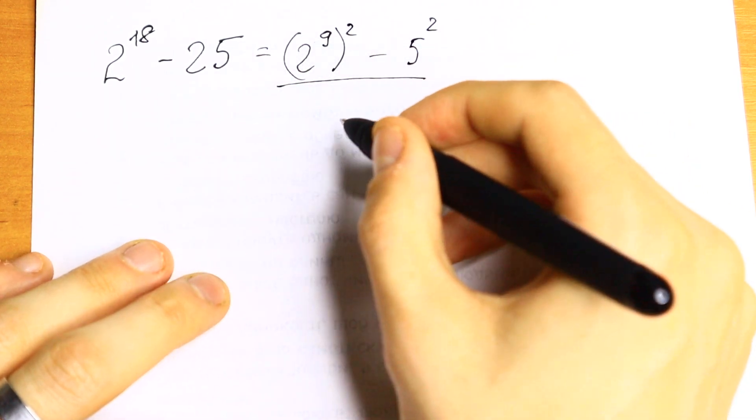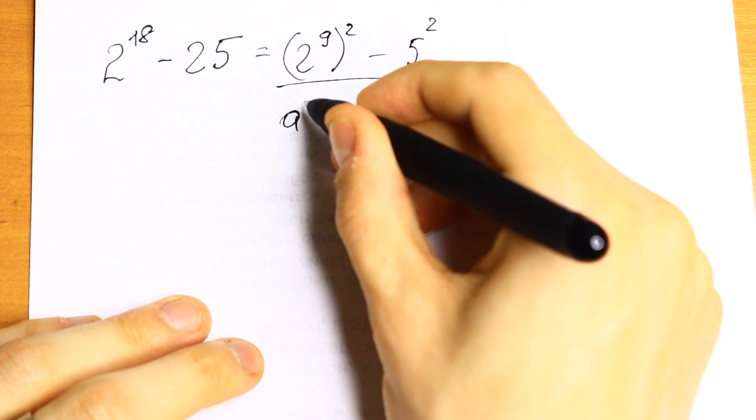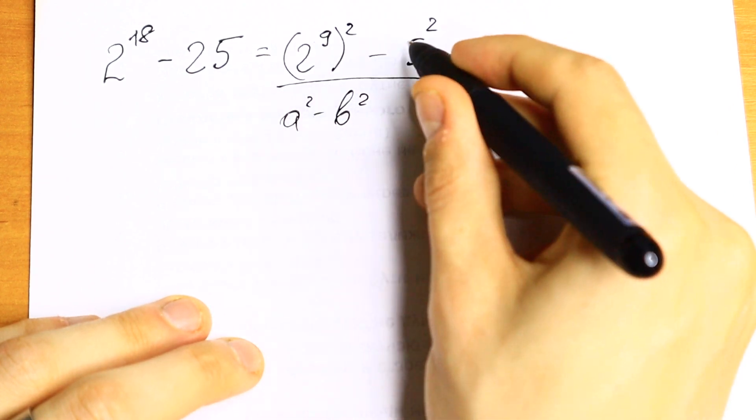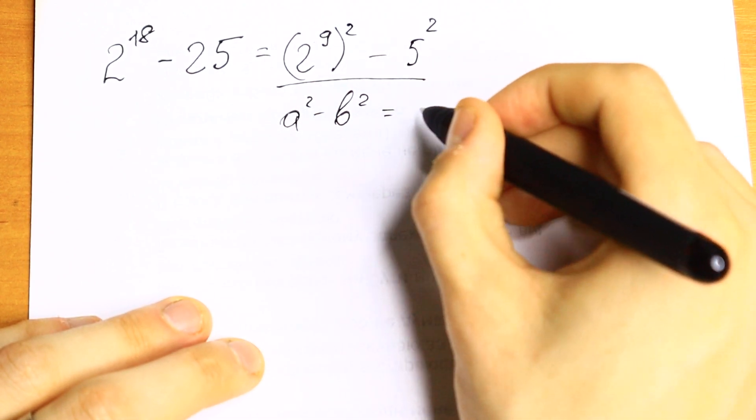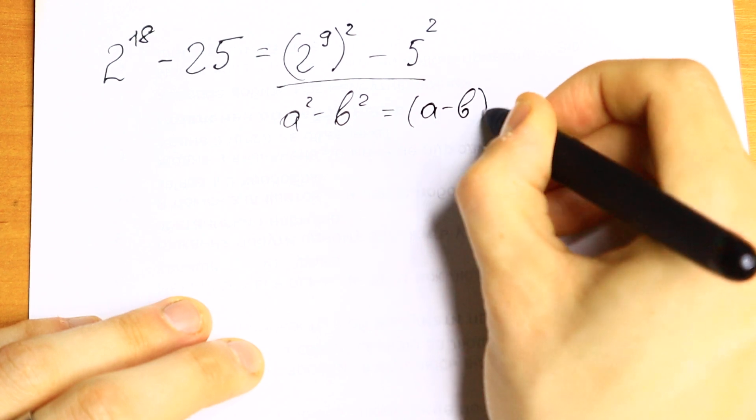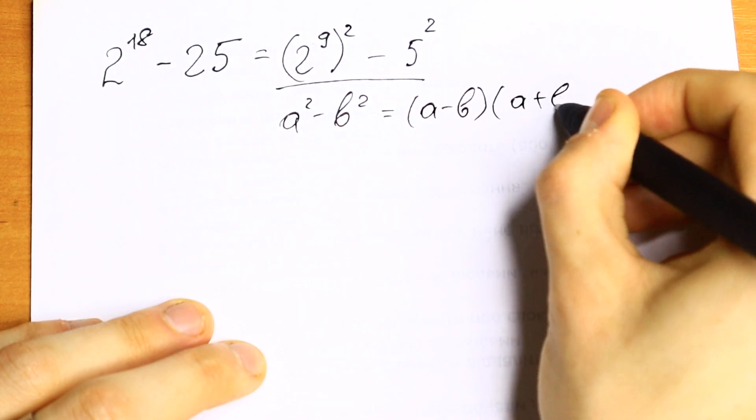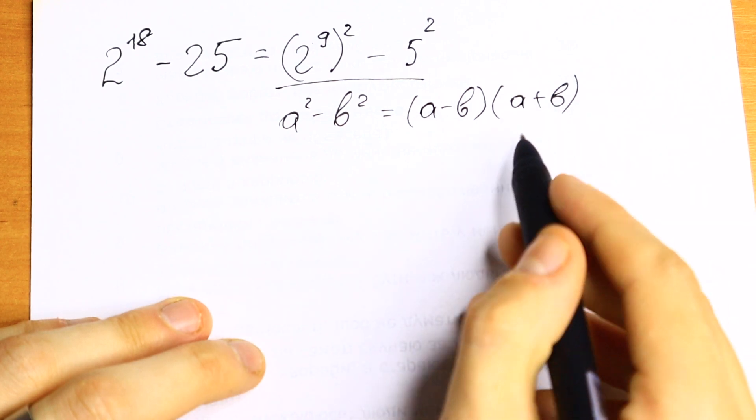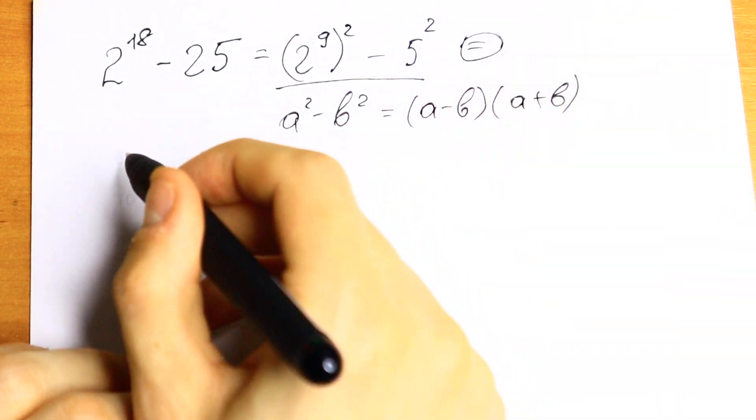And we need to know the formula. As you can see right here we have difference of squares. So we need to know the formula a square minus b square. Because we have difference of squares. And we need to know that this will be equal to a minus b times a plus b. So difference and the sum. So let's use this formula.